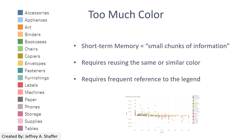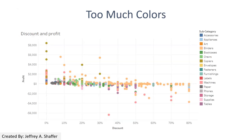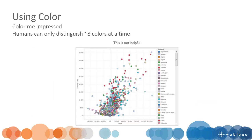Do not use too many colors, because colors rely on the audience's short-term memory. Using too many colors requires the viewer to cross-reference the legend repeatedly, which is not best practice. If you use too many colors, some will always be hard to distinguish even for people without color deficiencies. People can only reliably distinguish about eight colors at a time, so limit the number of colors to fewer than five.